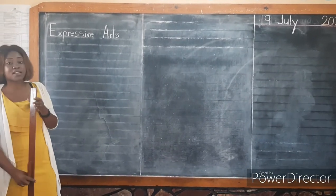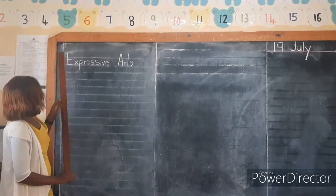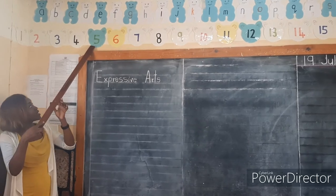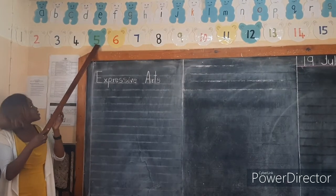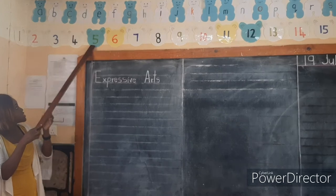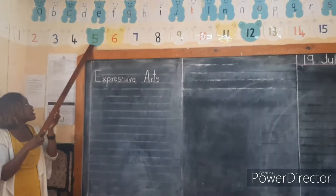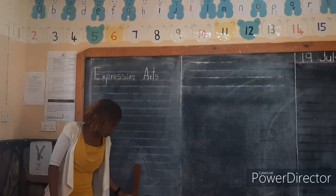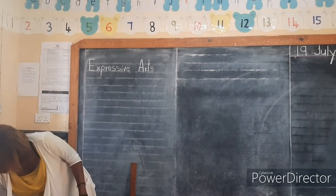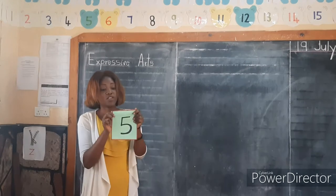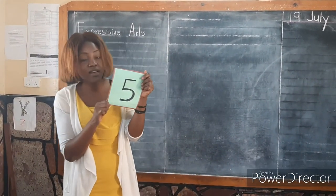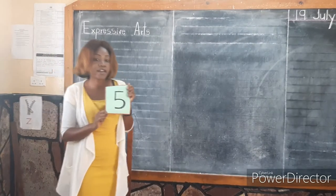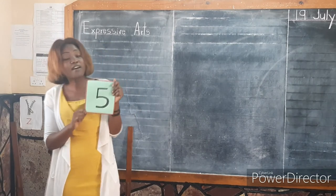I want us to identify the numbers that are pointed. I want someone to identify this number here — what number is this one that Tisha is pointing at? This one here is number 5. Number 5. How do we write number 5? I want us to talk about how we write number 5.